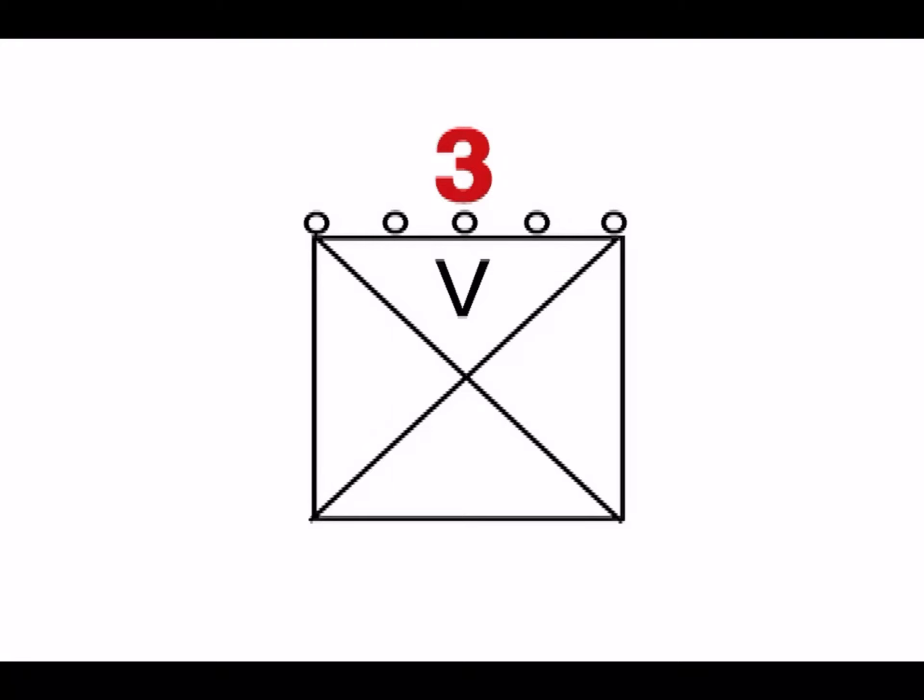Vibrato, represented by a V. Vibrato is a rapid, slight variation in pitch, caused by shaking your finger to vibrate the string.